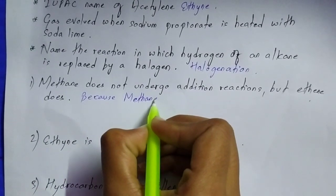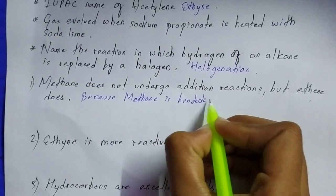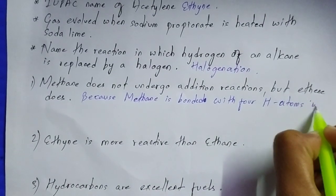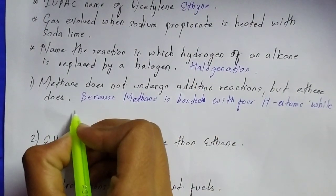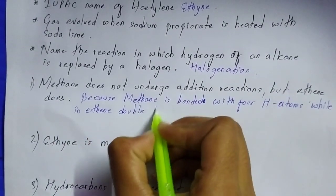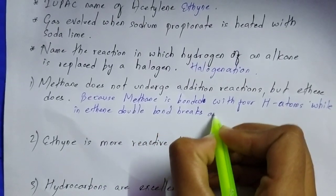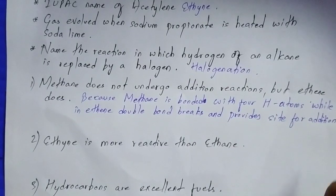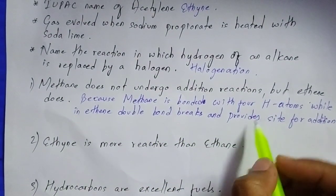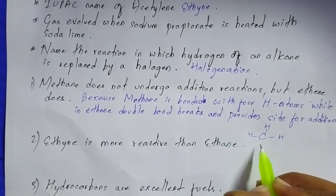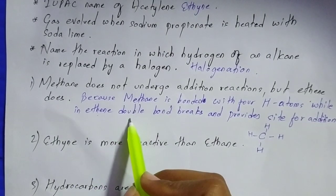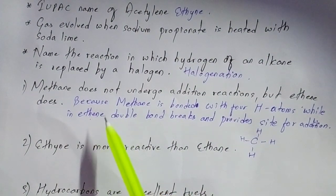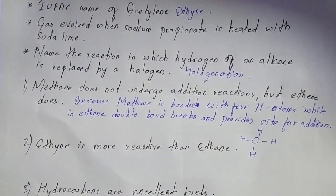The reason is: methane is bonded with four hydrogen atoms, while in ethene the double bond breaks and provides a site for addition. You must know the structure of methane - there is a carbon bonded with four hydrogen atoms. In ethene there is a double bond, whereas in methane there is a single bond because it is an alkane. The double bond in ethene breaks and provides a site for addition.